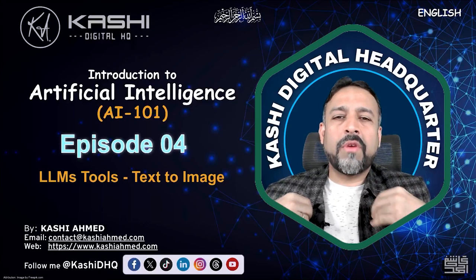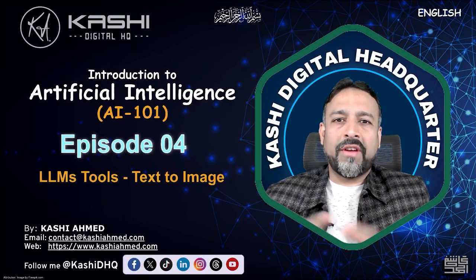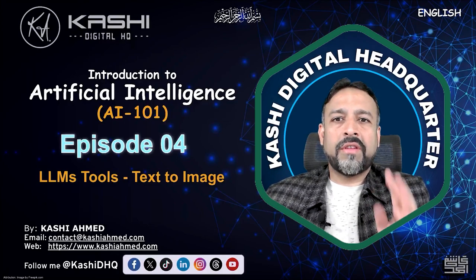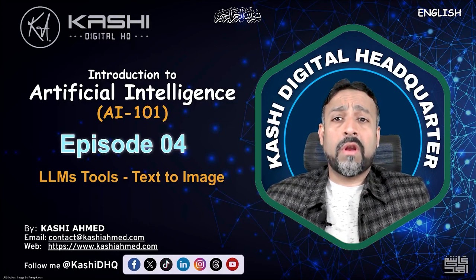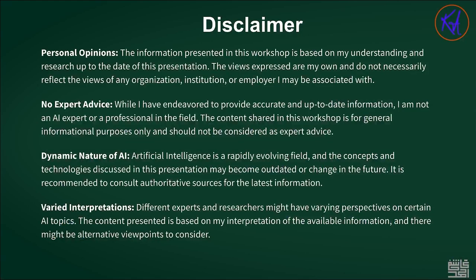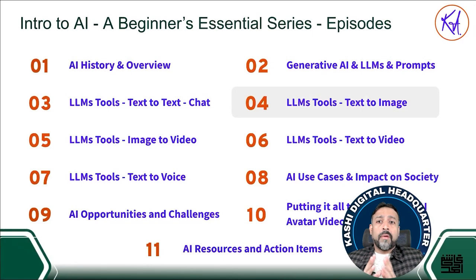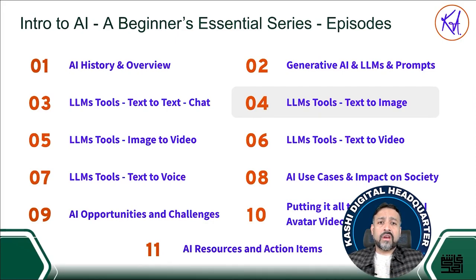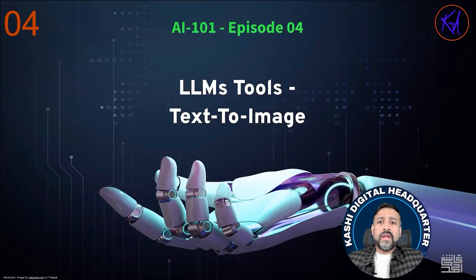Hello everyone, Assalamu Alaikum. I'm your friend Kashi, welcome to Kashi Digital Headquarter. This is our fourth session of Introduction to Artificial Intelligence AI 101 series. Quick disclaimer: the views are my own and I'm sharing what I learned. Today we are going to focus on session number four, which is about elements tool: text to image. Please check out sessions one, two, and three that build the foundation. Last session we talked about text-to-text LLM tools.